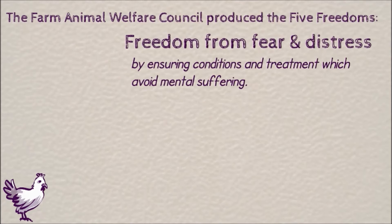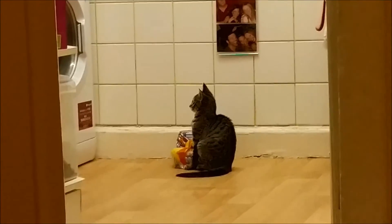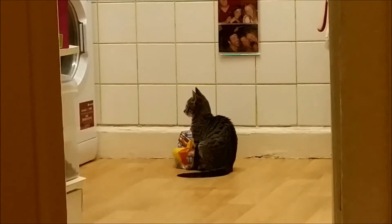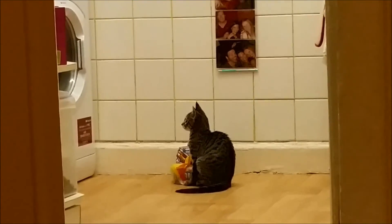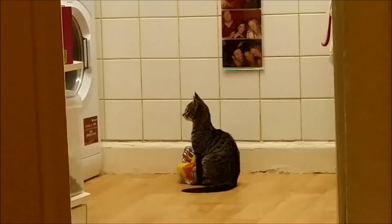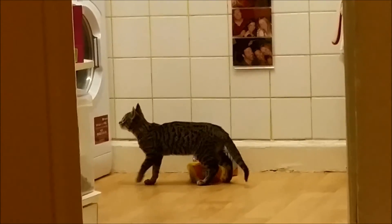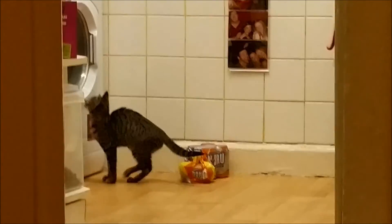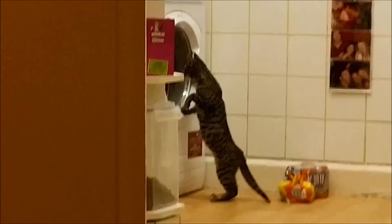The freedom from fear and distress includes not just protecting animals from unnecessary stress, but ensuring that if they do face an environment with something they might find frightening, they are given adequate training to help them. Young animals may need to be habituated to anything they might frequently encounter which might frighten them. For example, young pets might need to find out what a washing machine is.